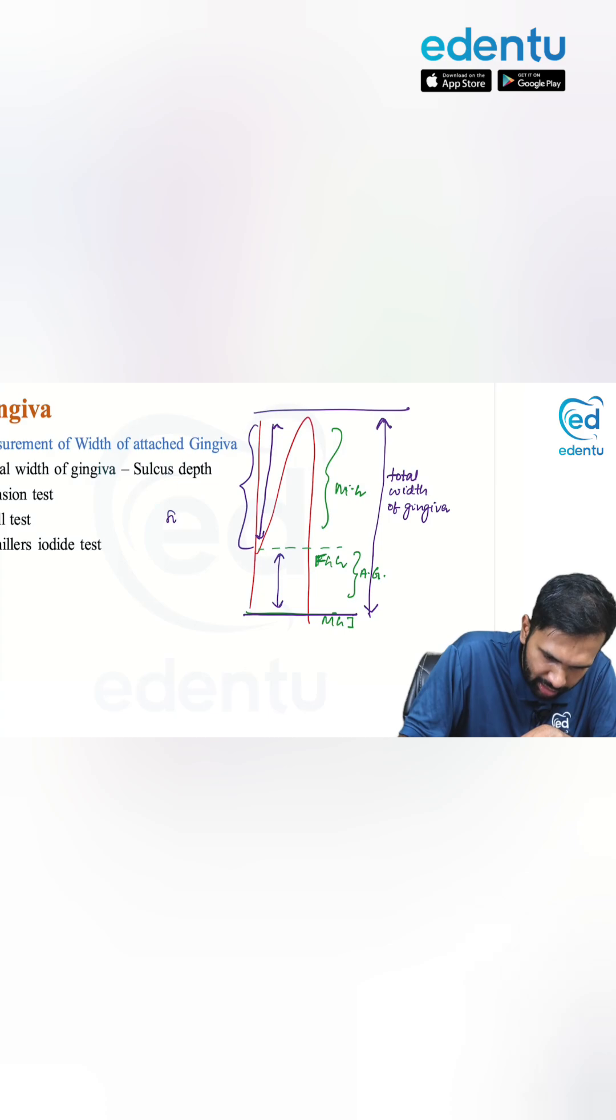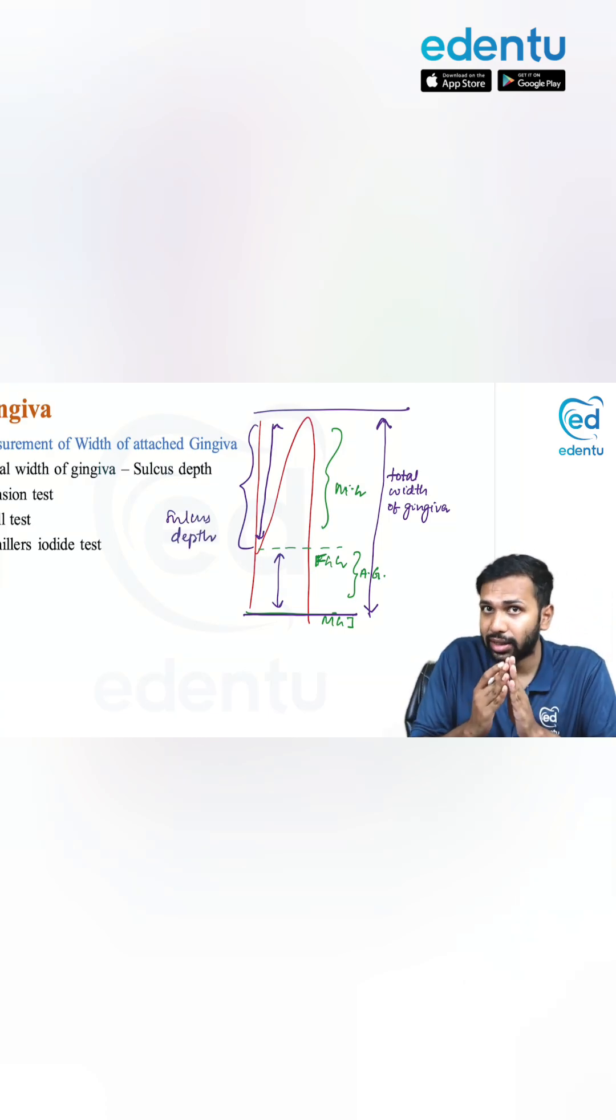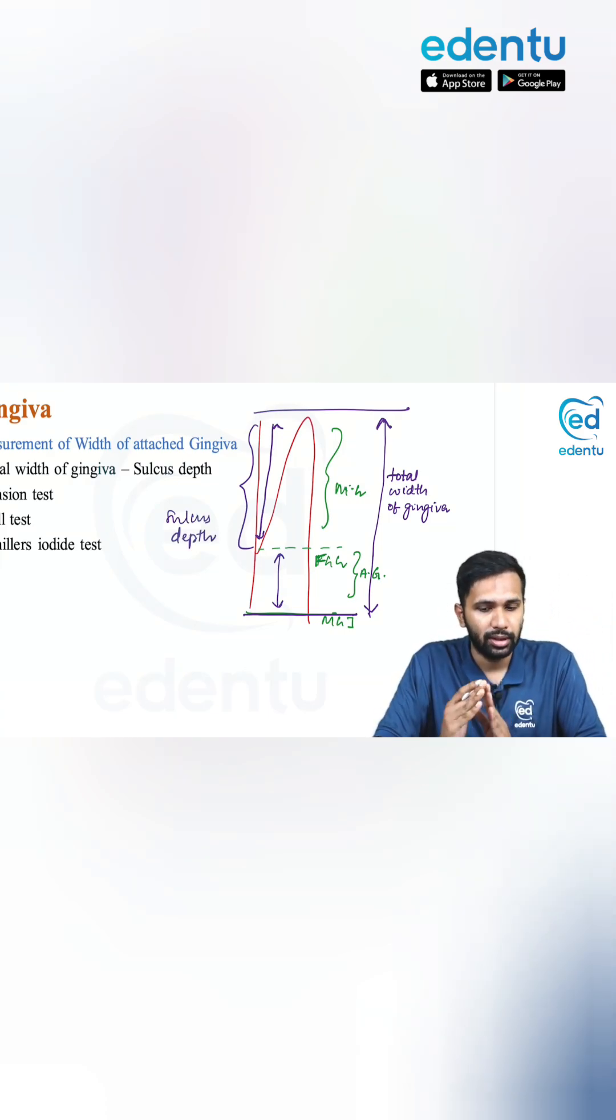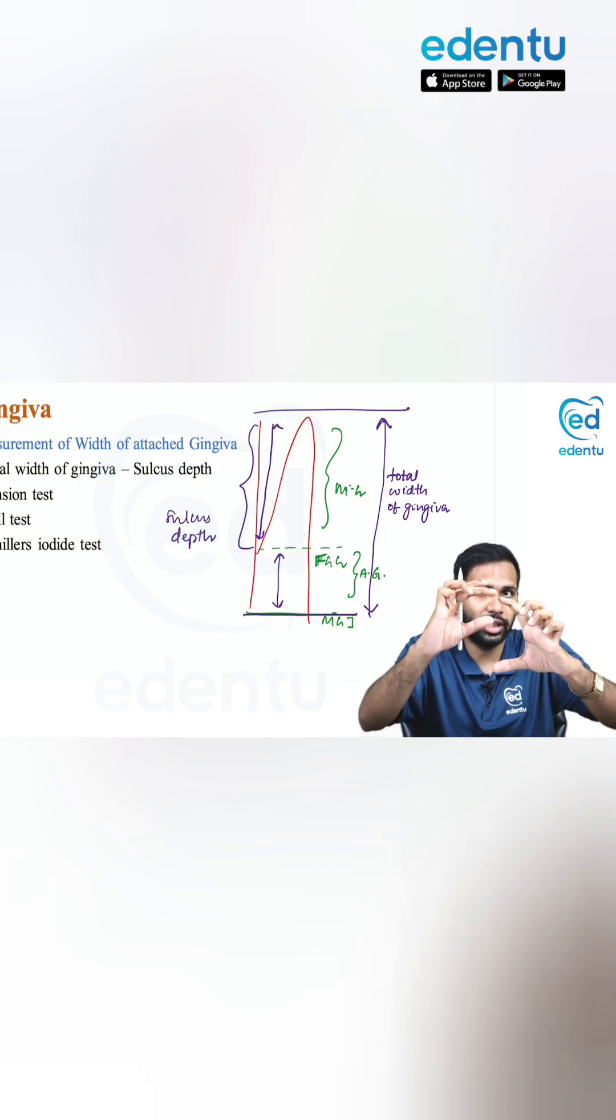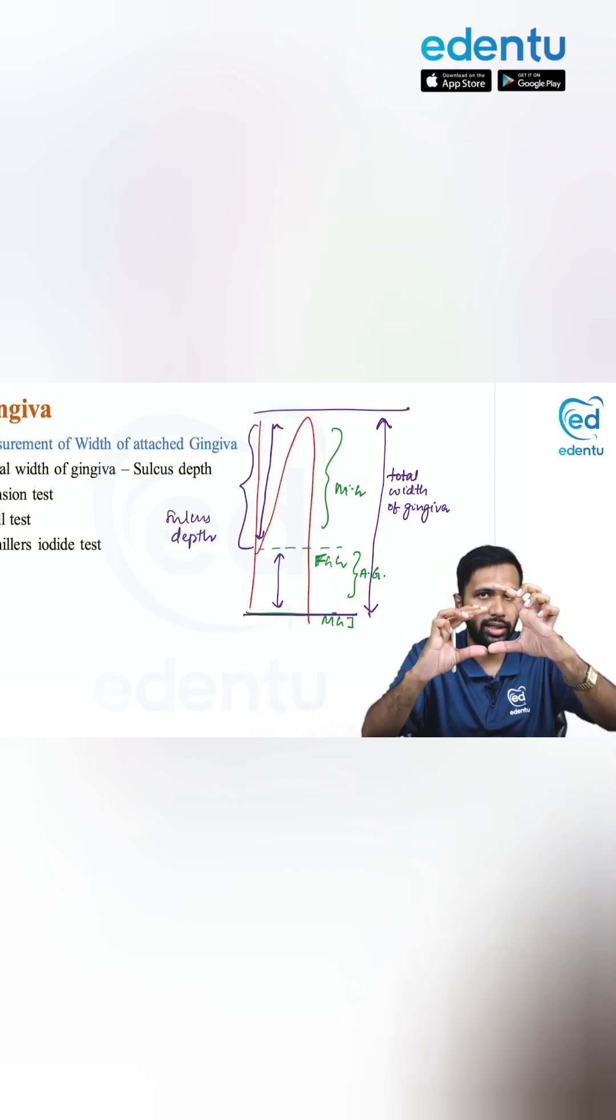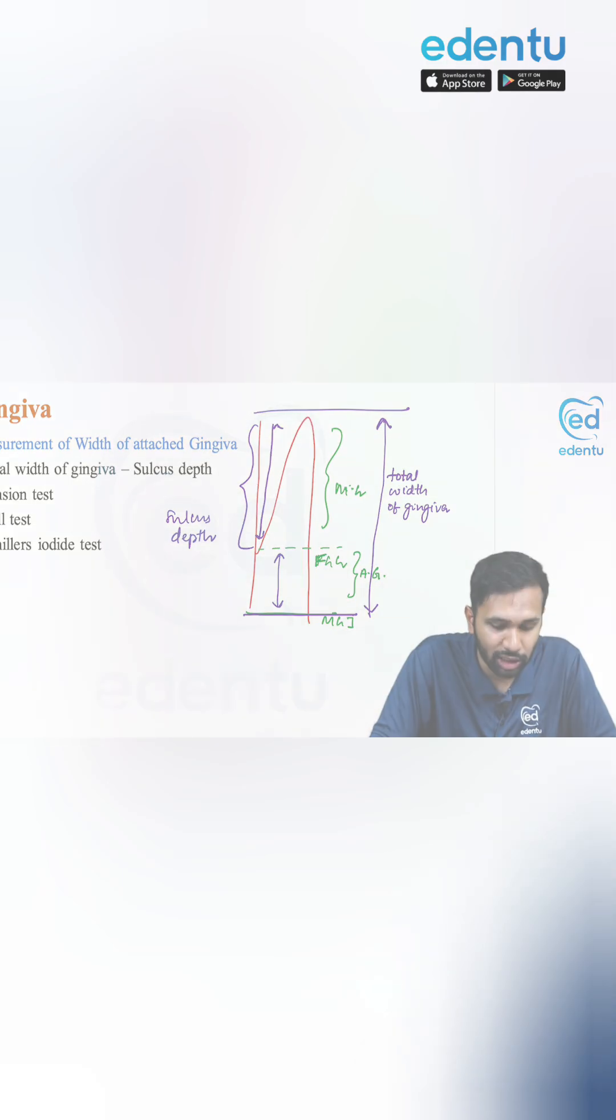Measure the sulcus depth and subtract it from the total width. You have the total width and the sulcus depth. You subtract this from the total, and you get the width of the attached gingiva.